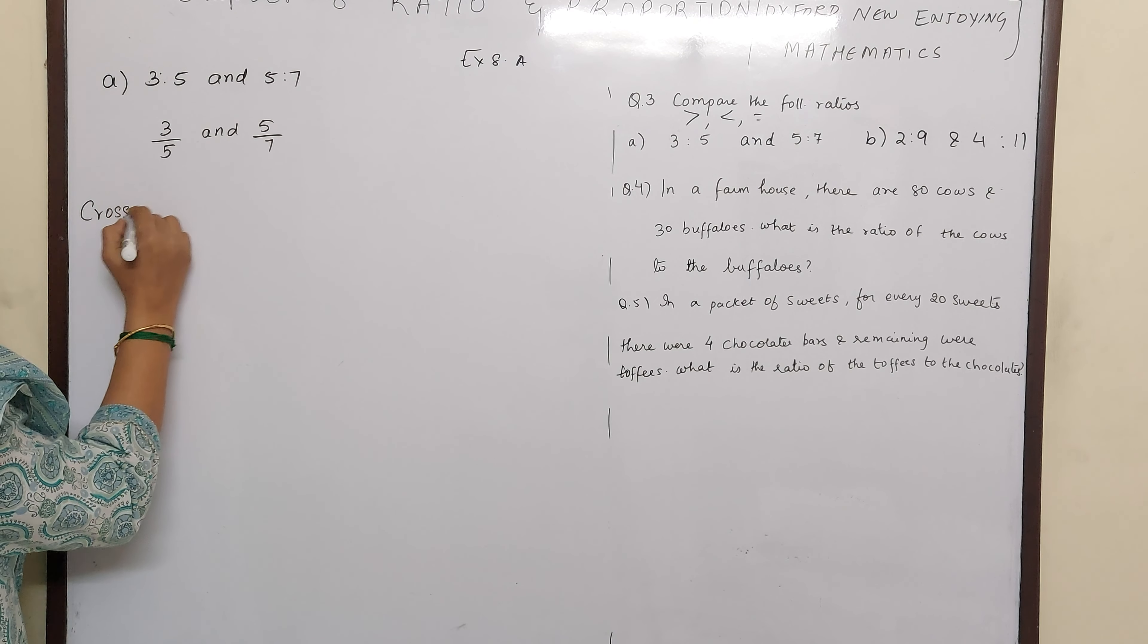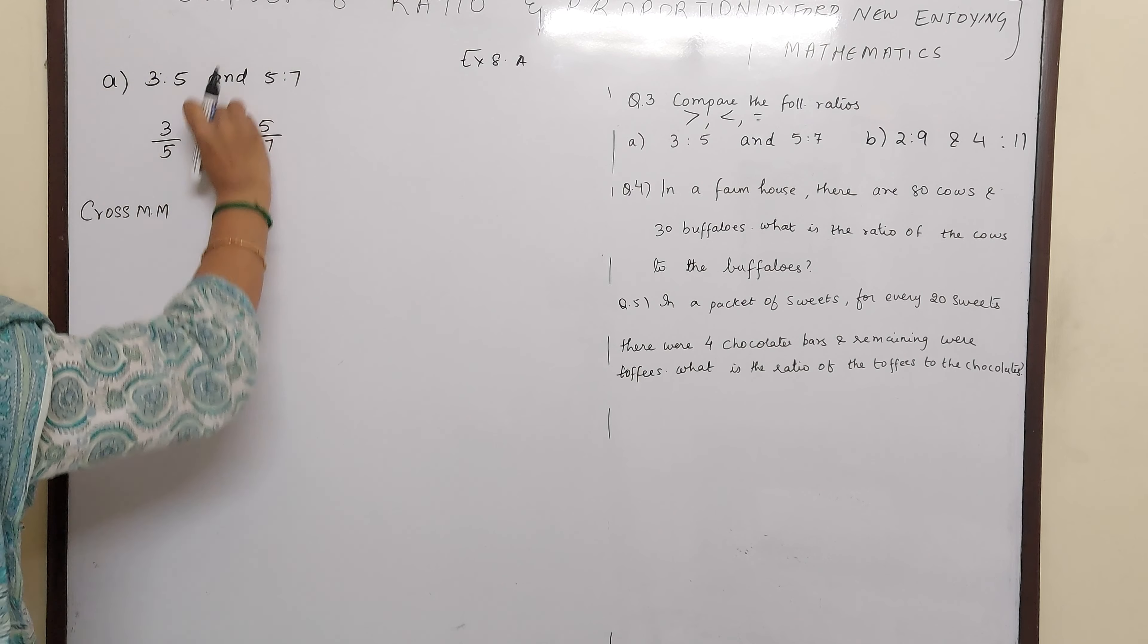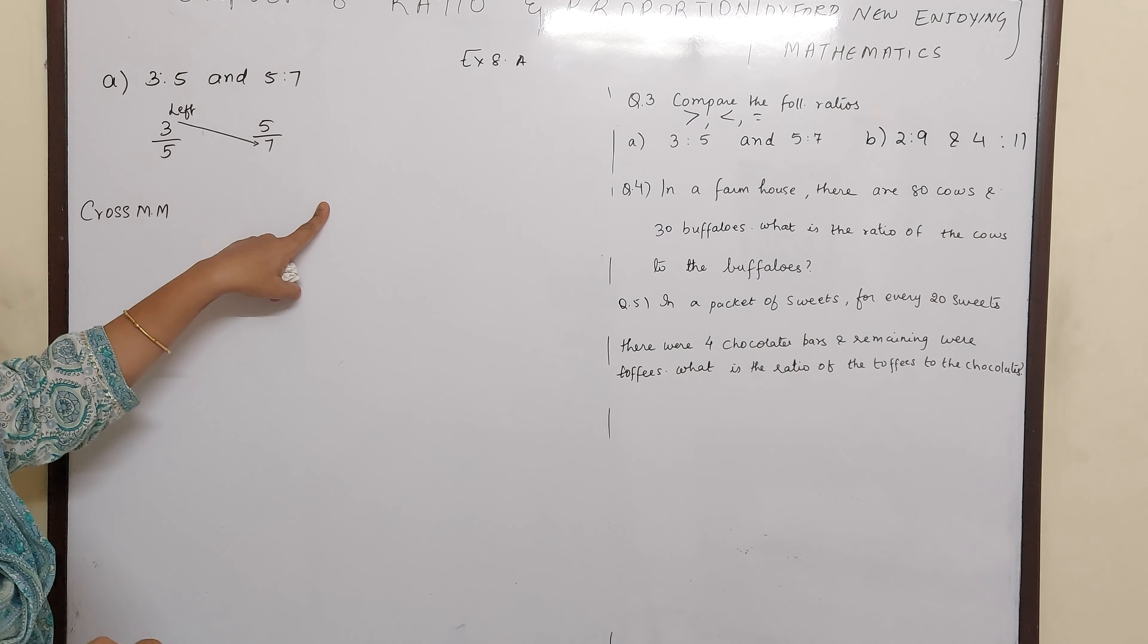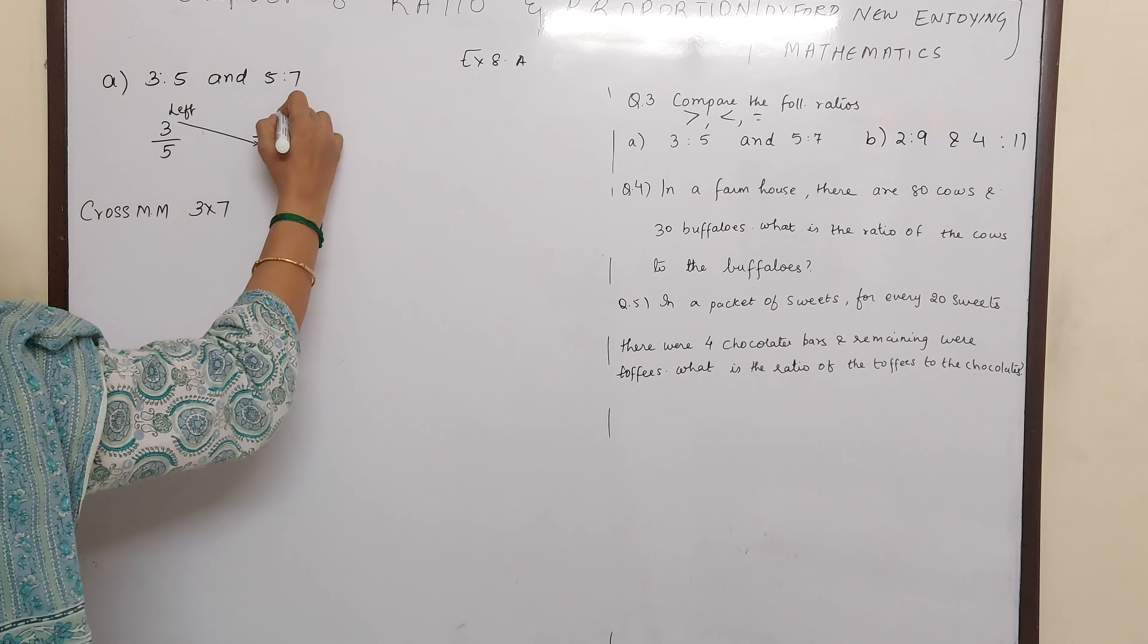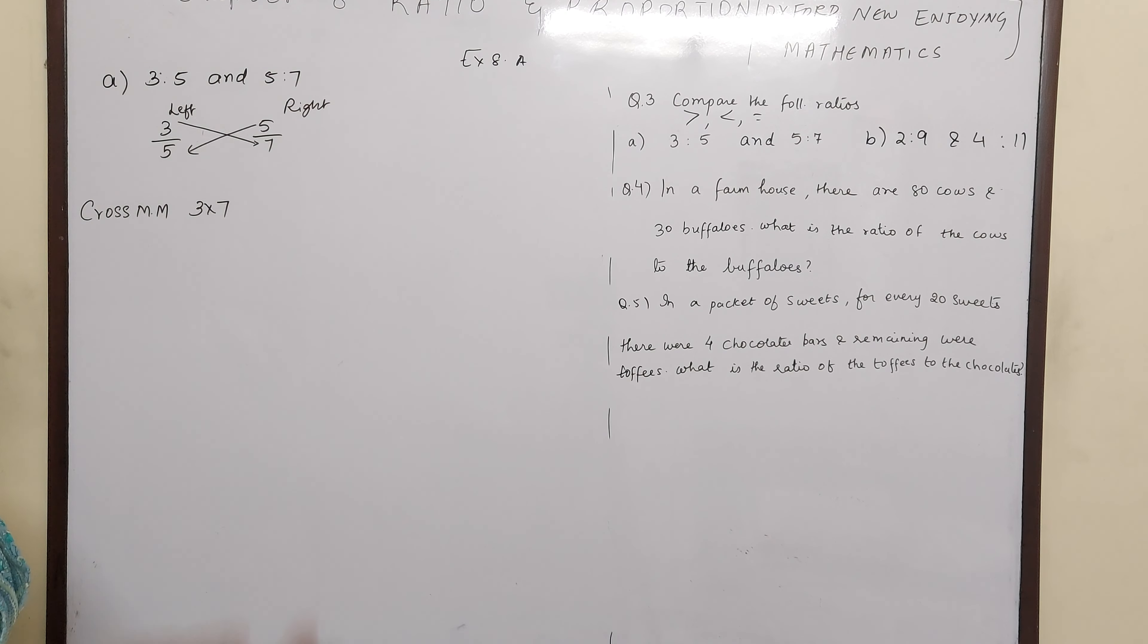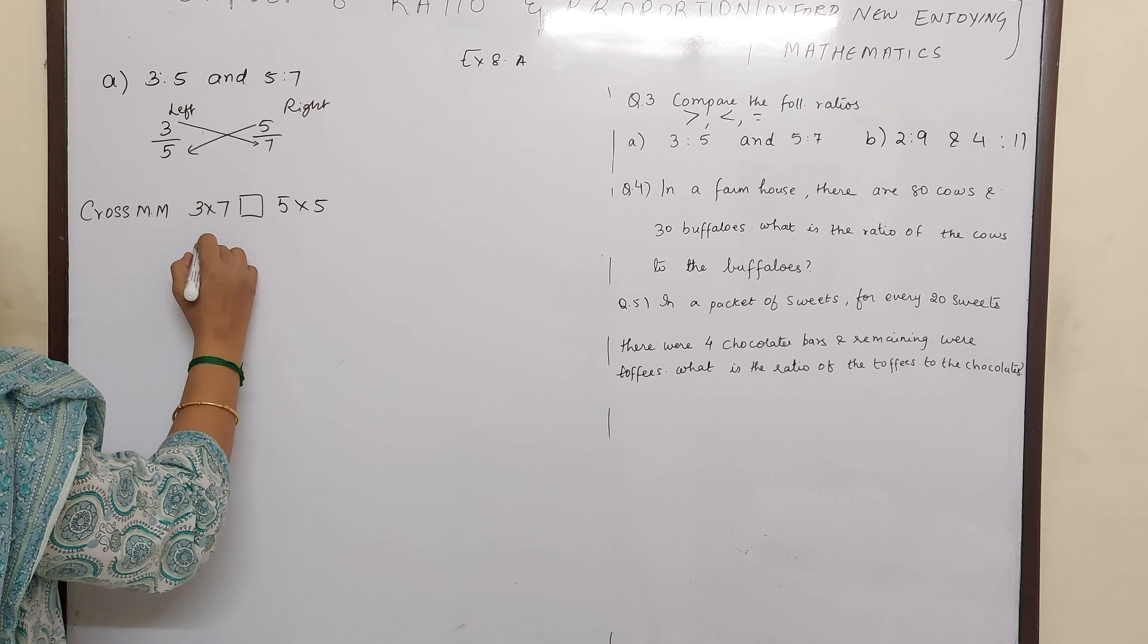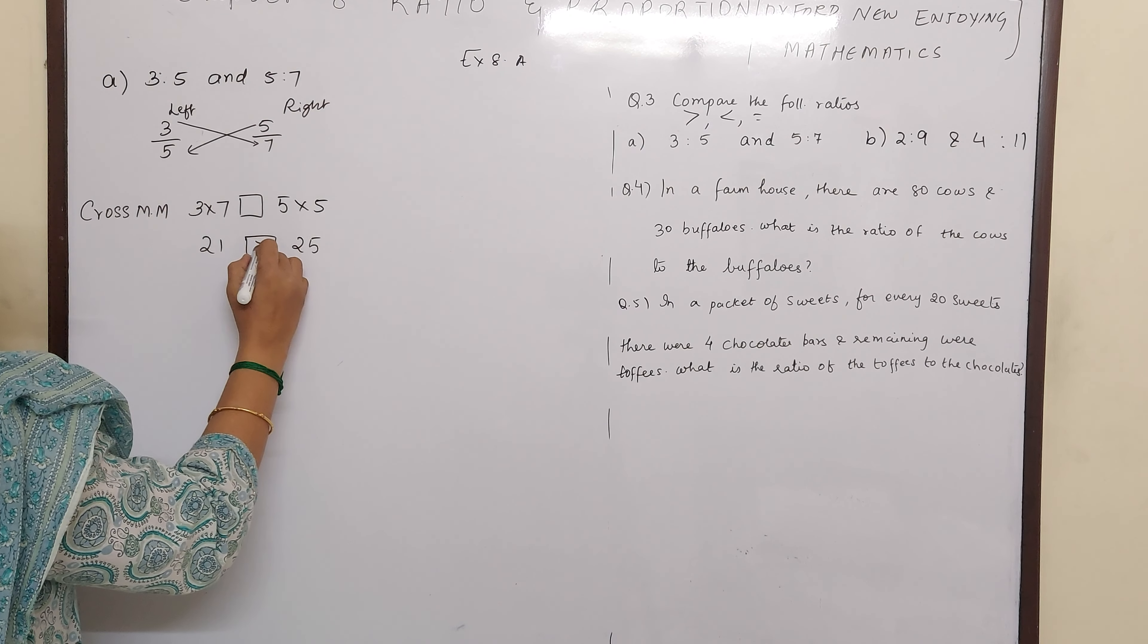In cross multiplication method, what we do is take the left side numerator and multiply it with the right side denominator, that is 3 into 7. Then with the right side numerator we will multiply the left side denominator, that means this is called cross multiplication method, 5 into 5. Now if you see, 3 sevens are 21 and 5 fives are 25, so you can say this side is greater.